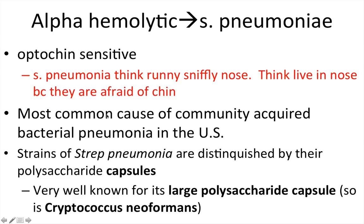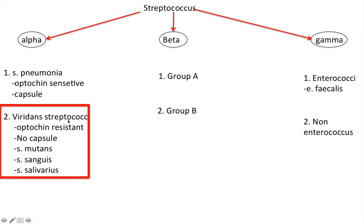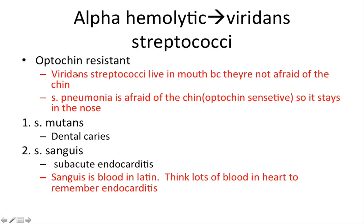S. pneumoniae is the most common cause of community-acquired bacterial pneumonia in the US. Strains are distinguished by their large polysaccharide capsules — S. pneumoniae and Cryptococcus neoformans are both frequently tested for having prominent capsules. Viridans streptococci is optochin resistant — it loves the chin. Strep mutans lives in the mouth, right by the chin, which is why viridans streptococci lives in the mouth — they're not afraid of the chin.